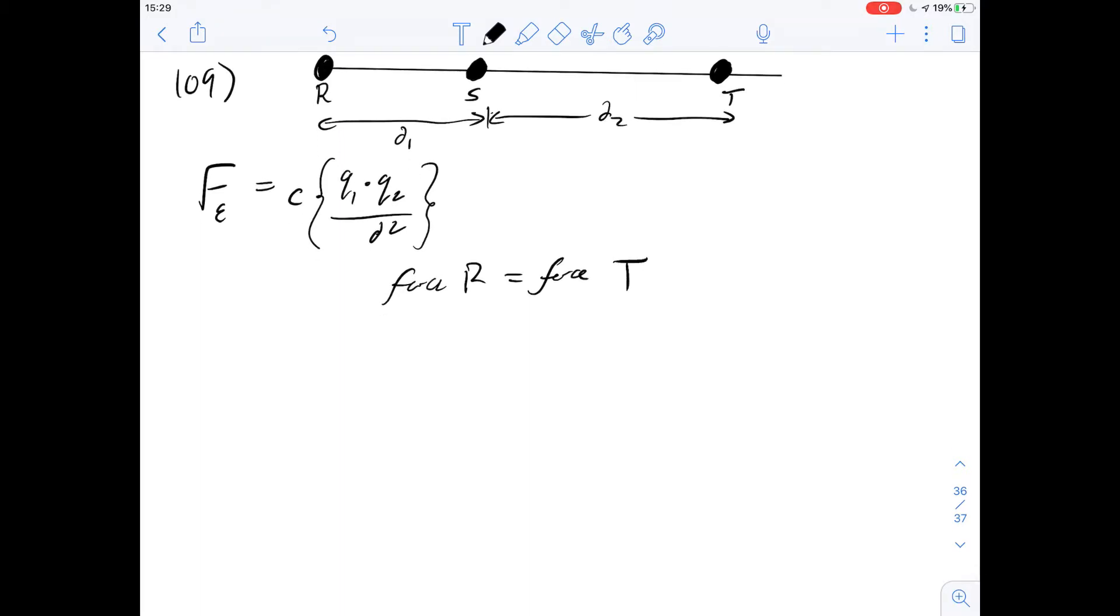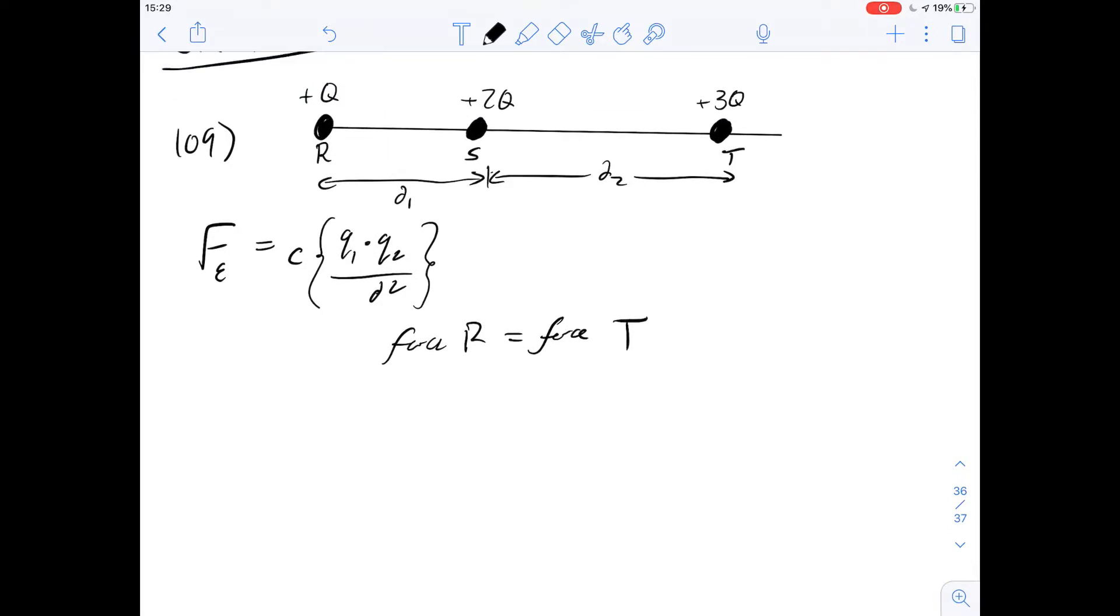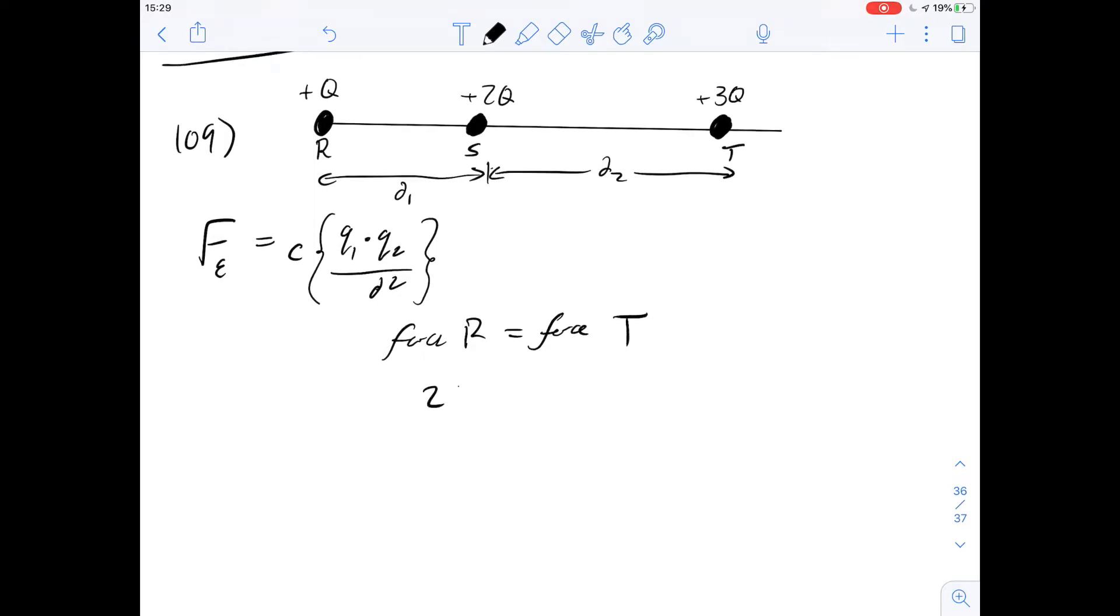So we've got this constant on either side which is going to be the same, and so we'll just leave that out. So we've got our equation here, so let's start off with the numerator of our fraction here. So it's going to be the product of the two charges here, so we're going to end up with 2q squared on this side over a distance of d1 squared.